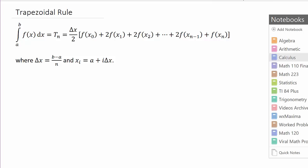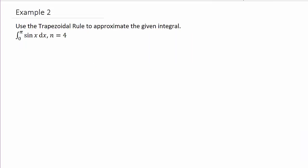So, let's come over here and look at the example. We've got the integral from 0 to π of sin(x) dx. And they tell us n equals 4. Alright, so first thing we're going to do is we're going to find delta x. So, remember delta x is b minus a, so that's π minus 0 over n, and n is 4. So, we get delta x is π over 4.